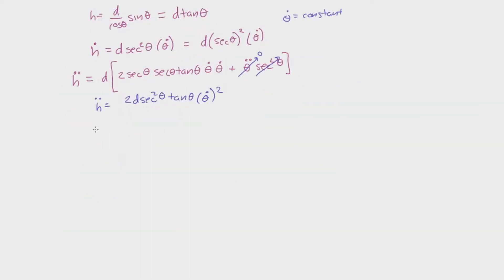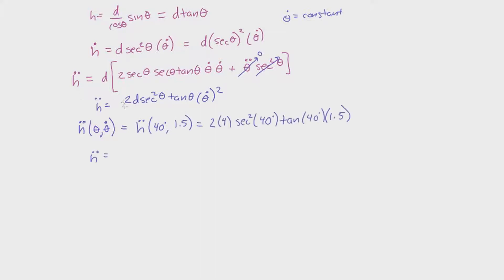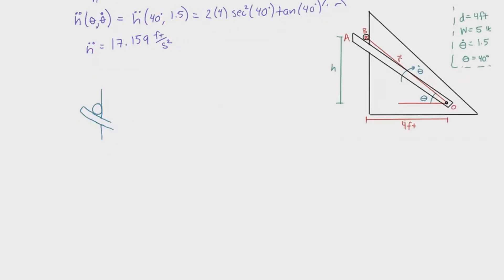Now I'll plug in the values. Ḧ is a function of theta and theta dot. At theta equals 40 degrees and theta dot equals 1.5 radians per second, the acceleration is 17.159 feet per second squared. The acceleration Ḧ is directed straight upward because that is the motion of the ball — it can only accelerate upward.